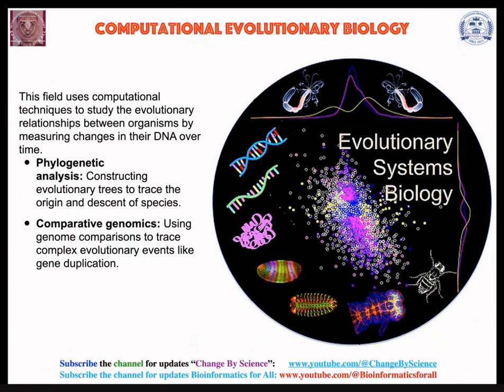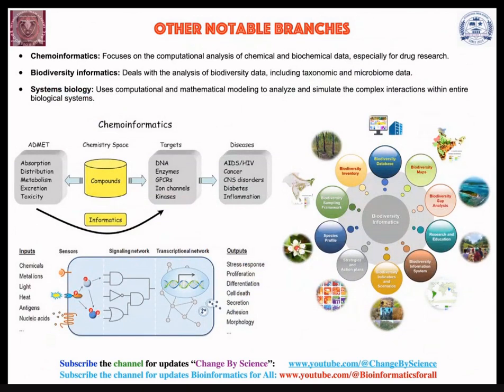For detailed applications, there are numerous research papers available on driver and passenger gene prediction. This is an accessible part of computational evolutionary biology. Another notable branch is cheminformatics, which is common in structural bioinformatics and structural biology, as well as biodiversity informatics, which applies bioinformatics across diverse environmental contexts.